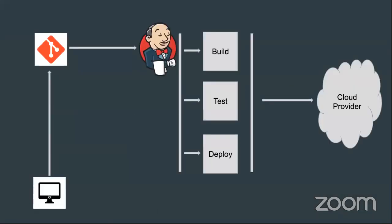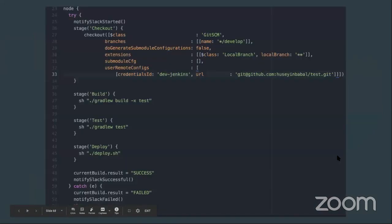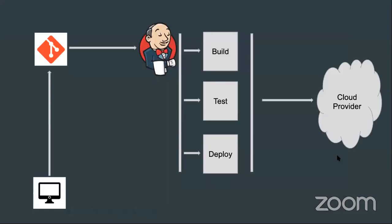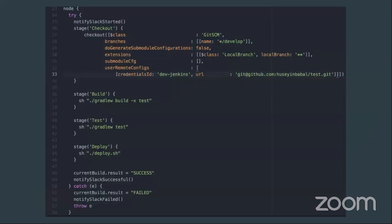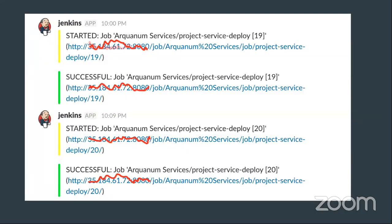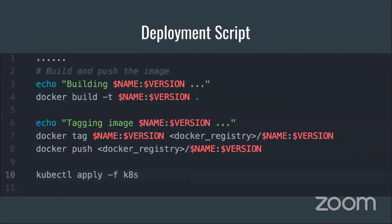For the deployment part, when you trigger a change in your system, it triggers a Jenkins build. In a simple scenario, you build, test, and deploy to a cloud provider. Inside your Jenkinsfile, we do build, test, and deploy, and we automatically notify ourselves in Slack to stay proactive. In the build step, we build our images, push to the registry, and then apply the Kubernetes folder again.